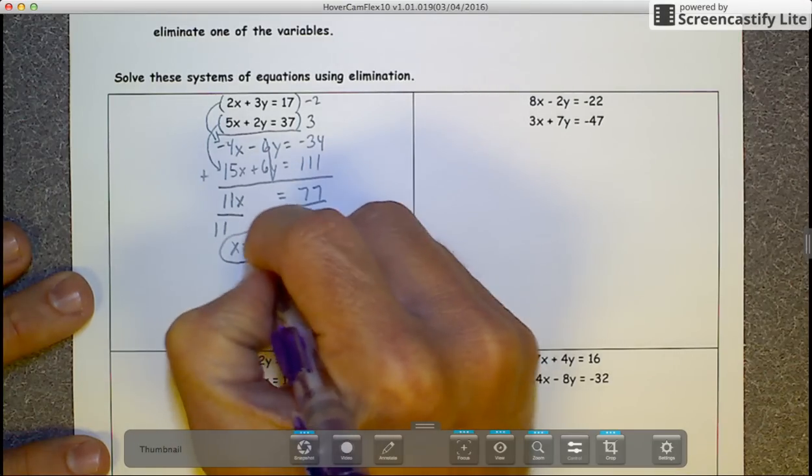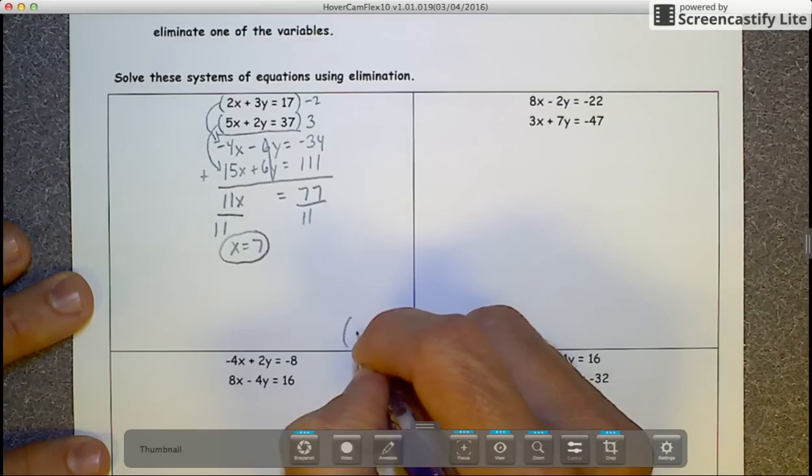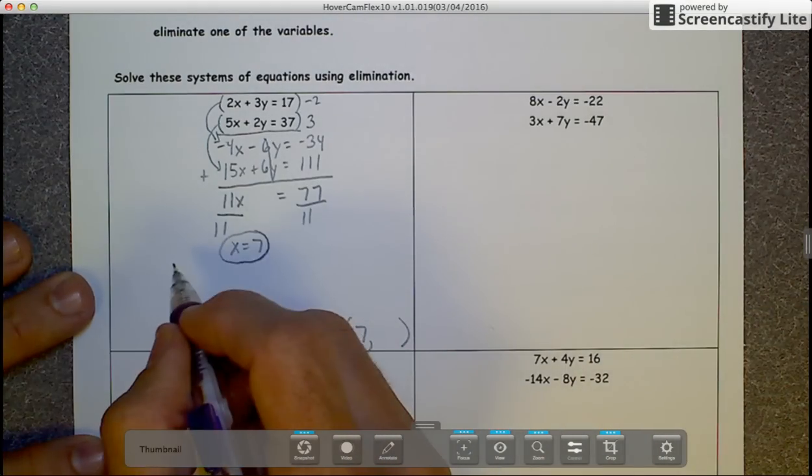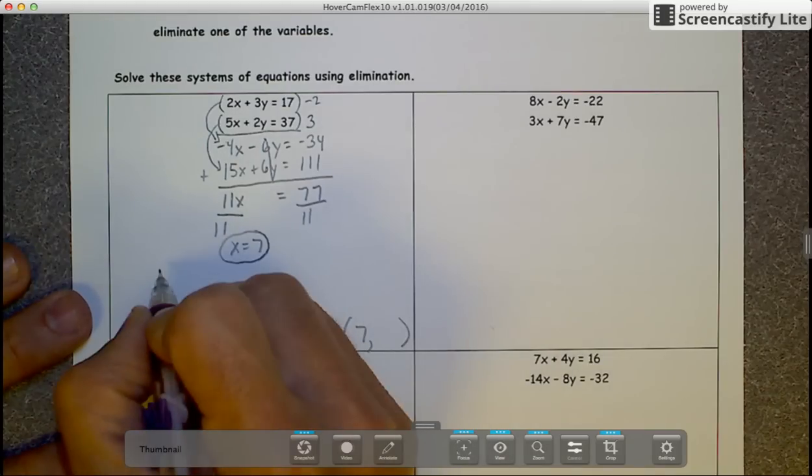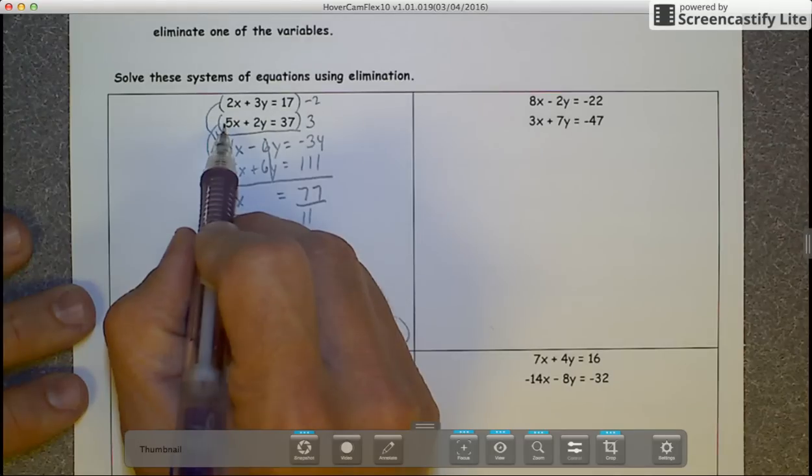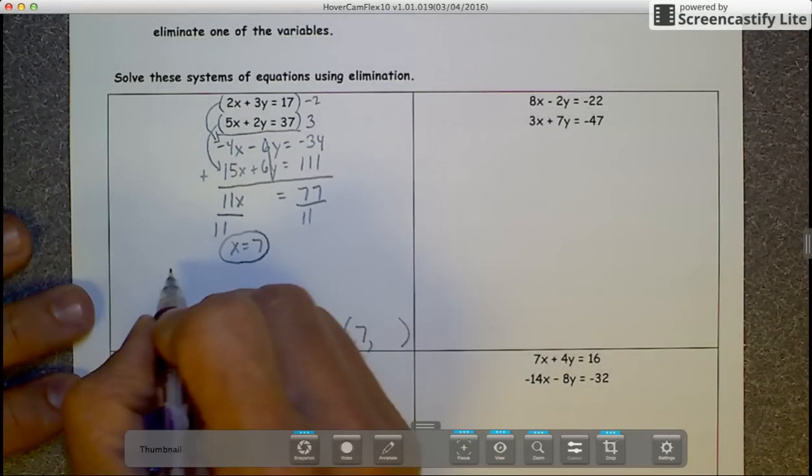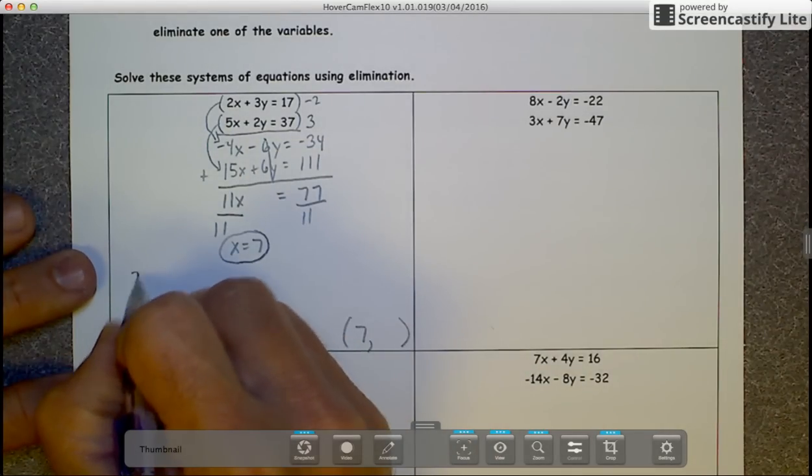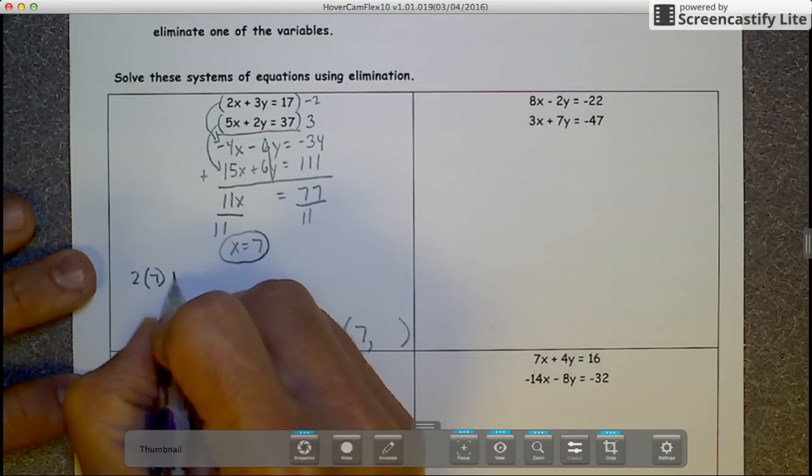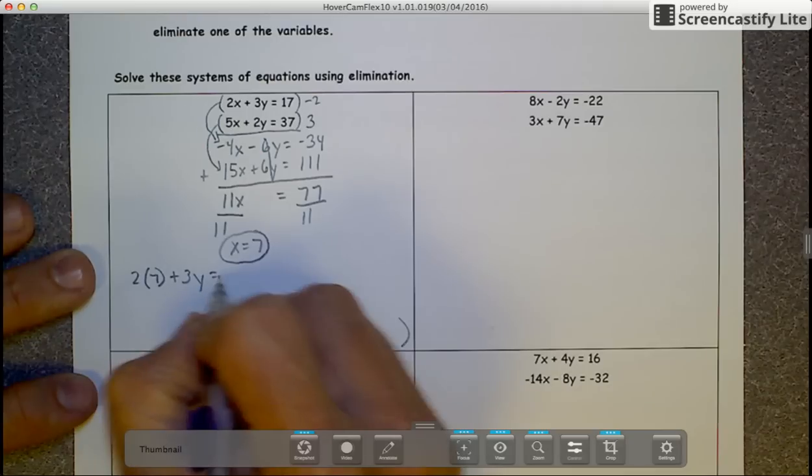My first coordinate is 7. Now to solve for my y coordinate, I'm going to substitute it into one of the original equations. I'll substitute it into the top one because it looks easy to do. So 2 times 7 plus 3y equals 17.